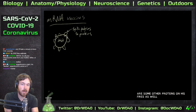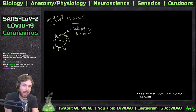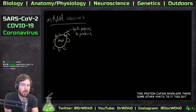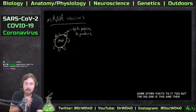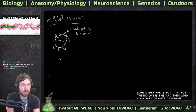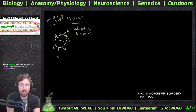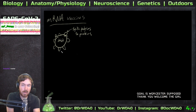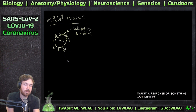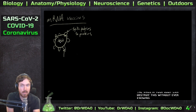There are other proteins on this virus as well — it has to build a protein capsid envelope and other parts. But the big one is the spike protein. When your body mounts an immune response, the goal is for something to identify these receptors on the virus so your body can destroy it without ever knowing it happened.